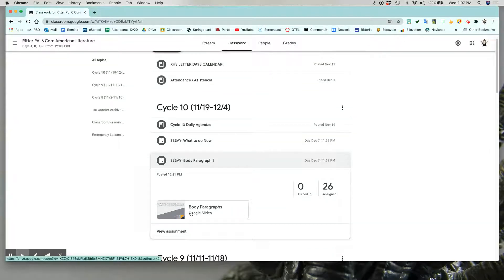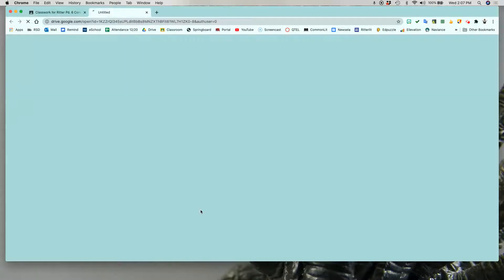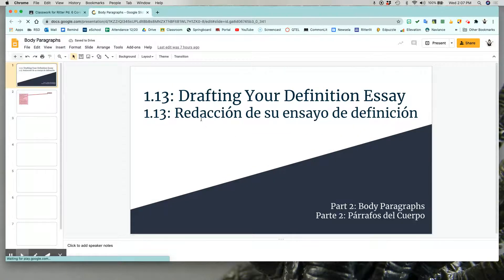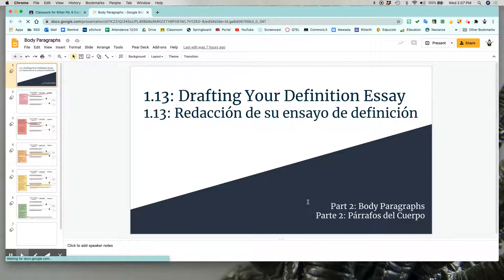It is a set of Google Slides. There is a copy made for you with your name in front of it. When you open that up, you'll see this cover slide that says Drafting Your Definition Essay Part 2: Body Paragraphs.